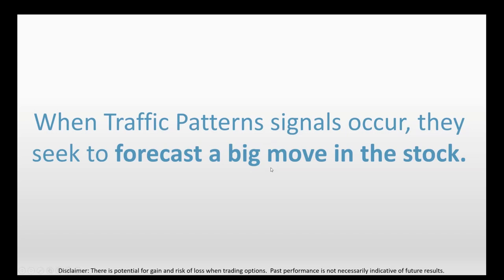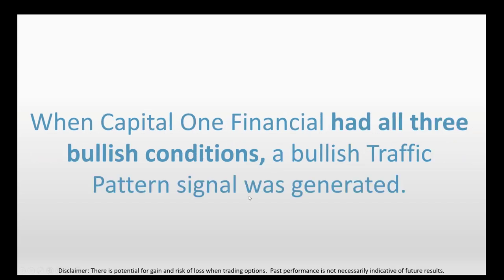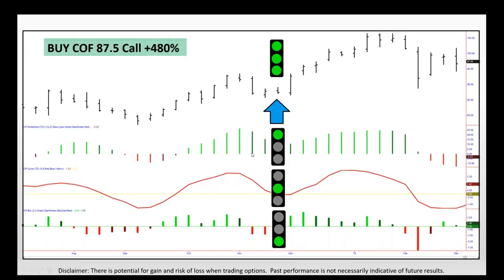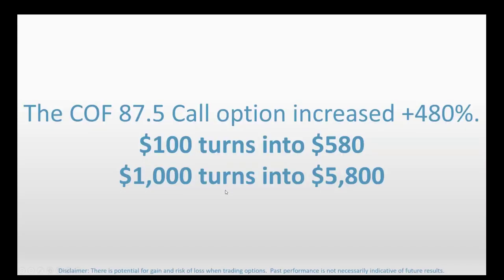When traffic pattern signals occur, they seek to forecast not only a direction but a potential big move in the stock. When Capital One Financial had all three bullish conditions, a bullish traffic signal was generated and we recommended buying the COF 87.5 calls. This is a textbook traffic signal: beautiful initial momentum, beautiful continuation momentum lighting up the first green light, the upswing as the second green light, and the trough trigger as the third green light. Those calls jumped in value by 480%: $100 grows to $580, or $1,000 turns into $5,800.